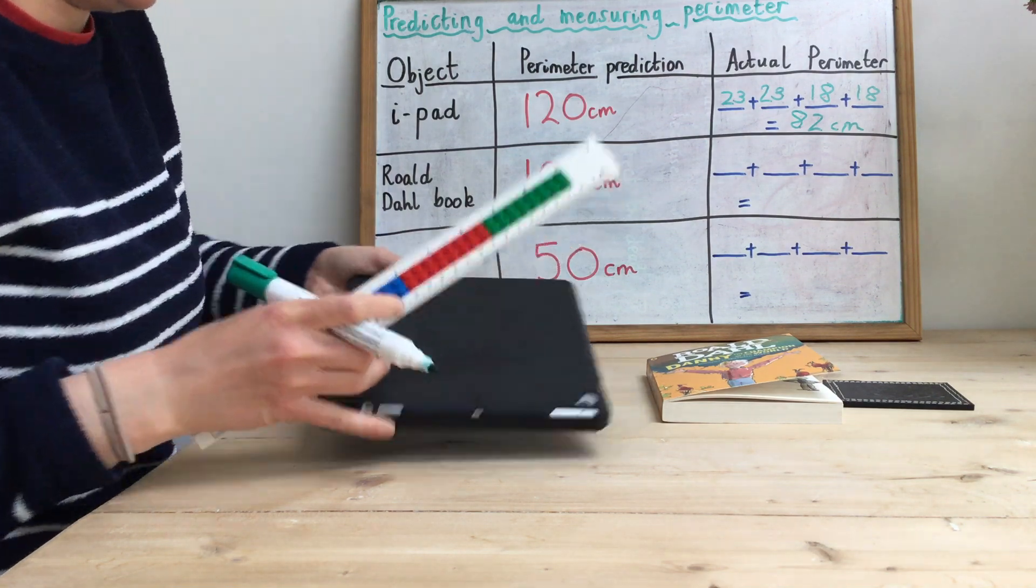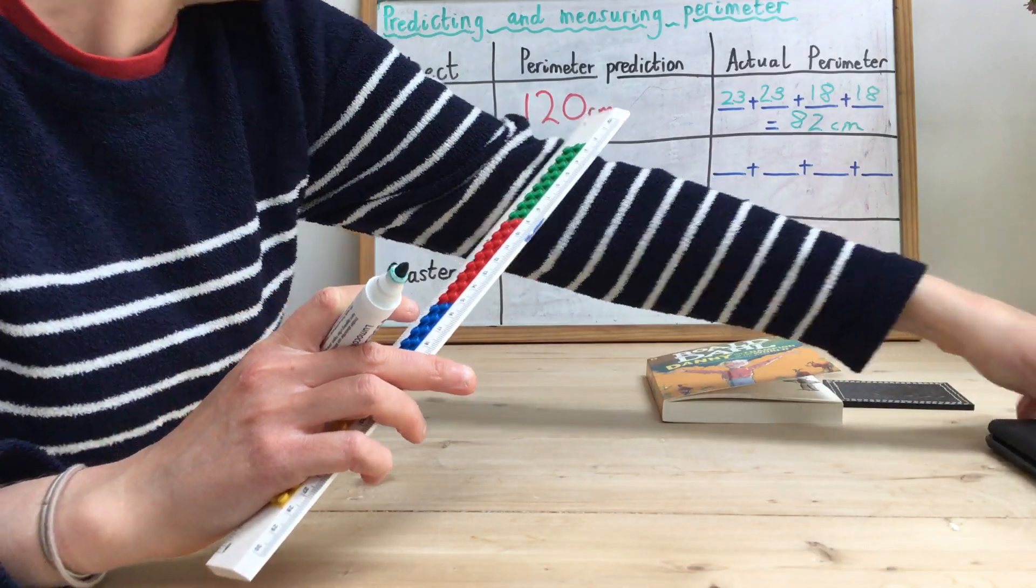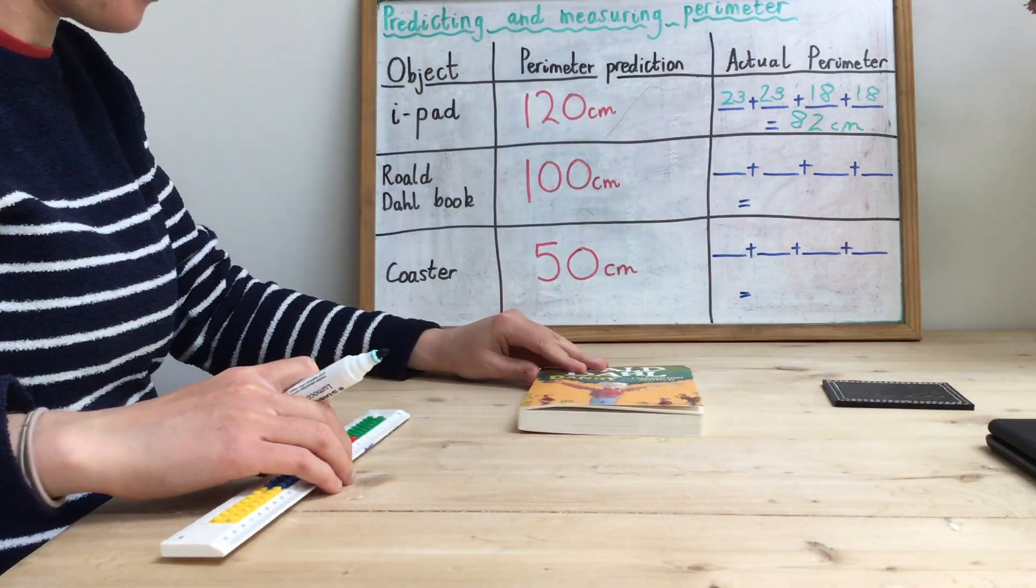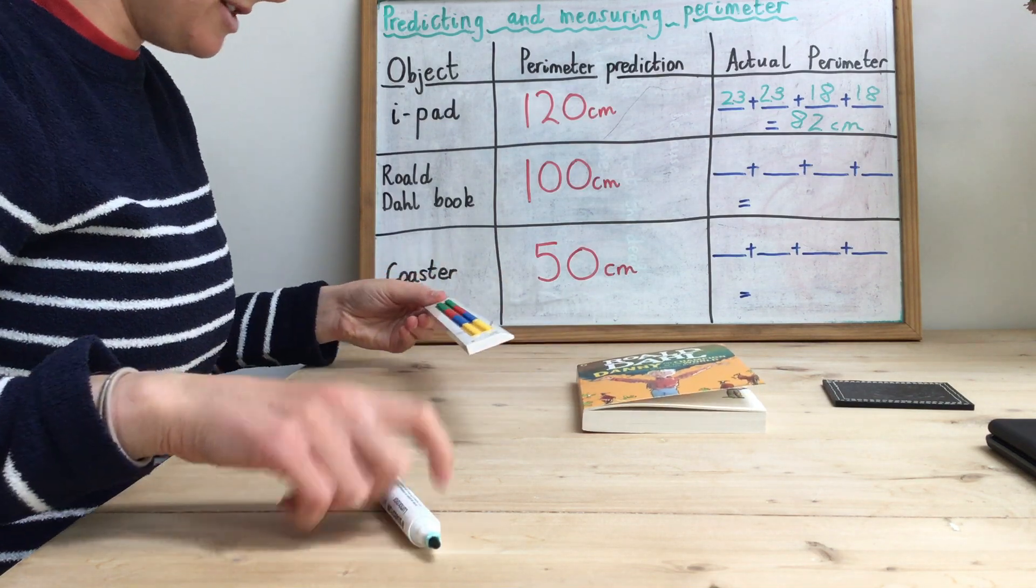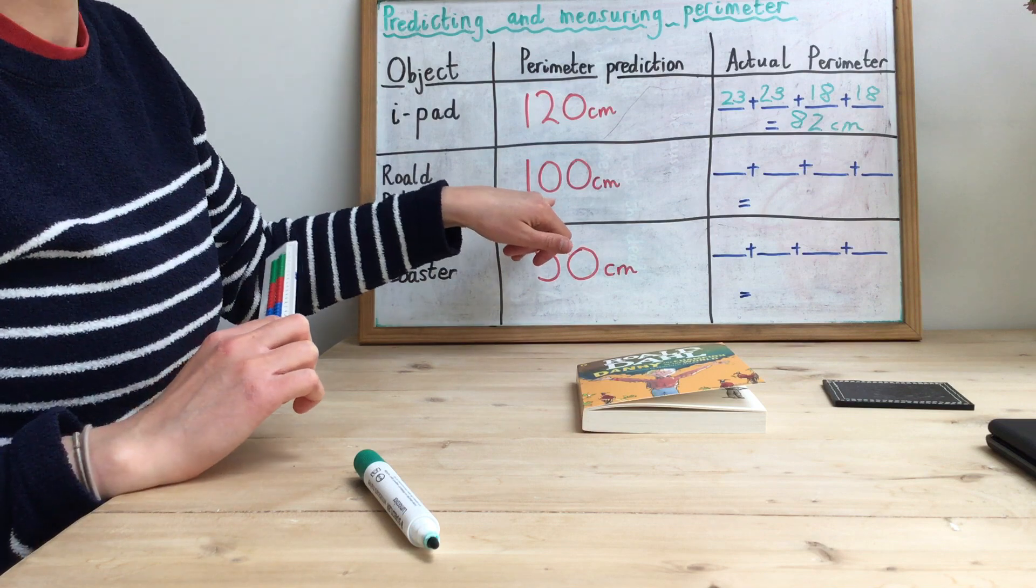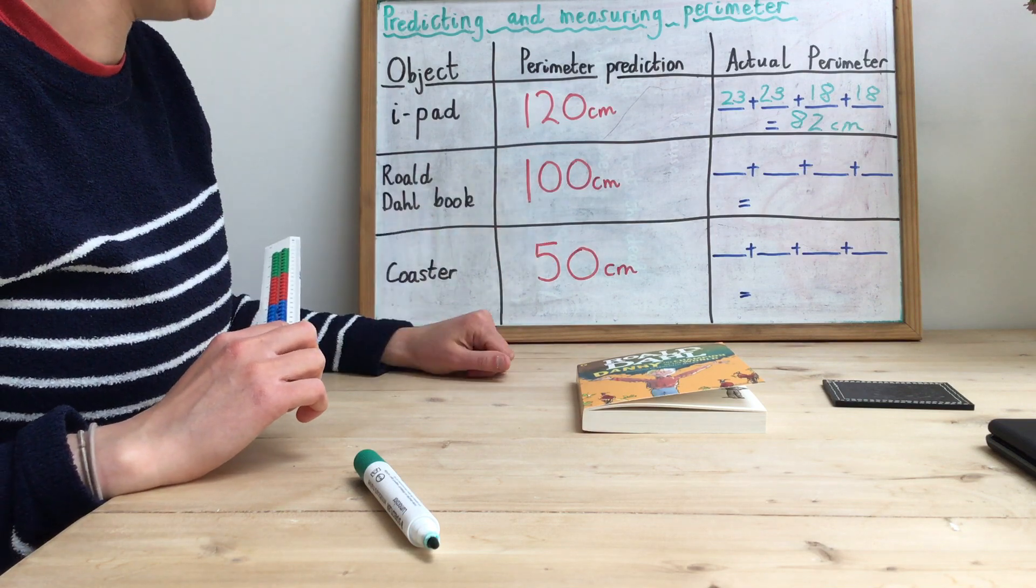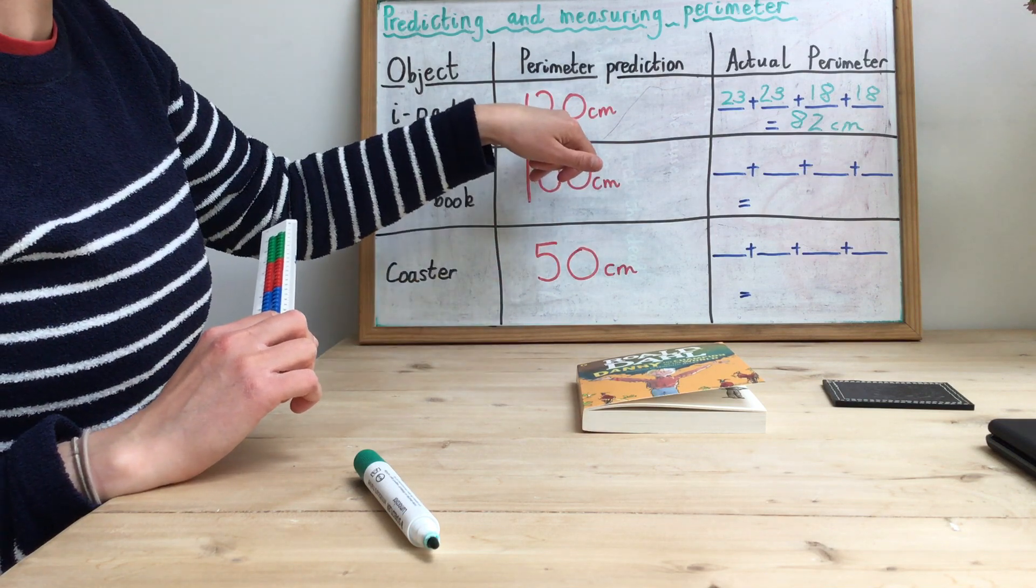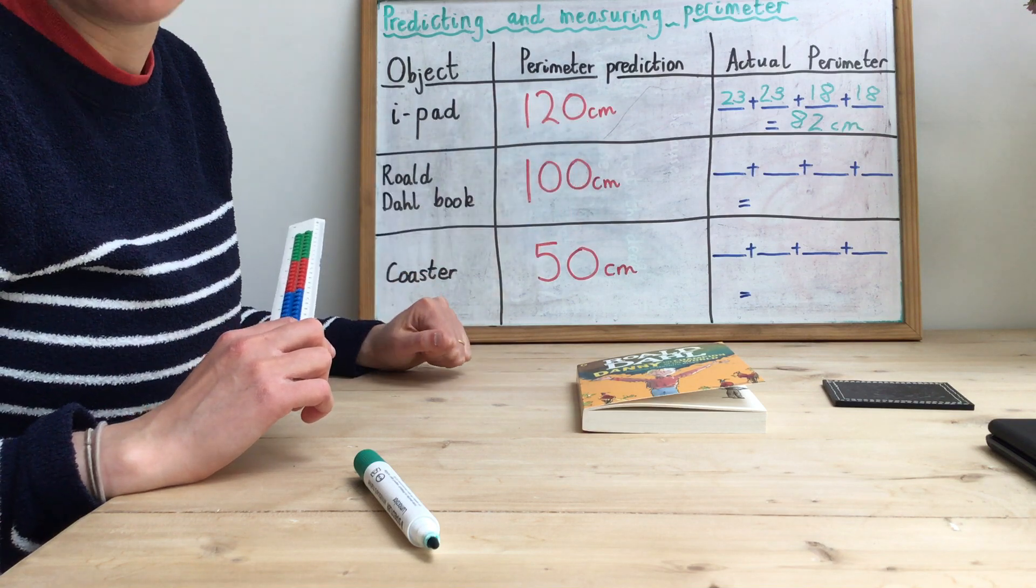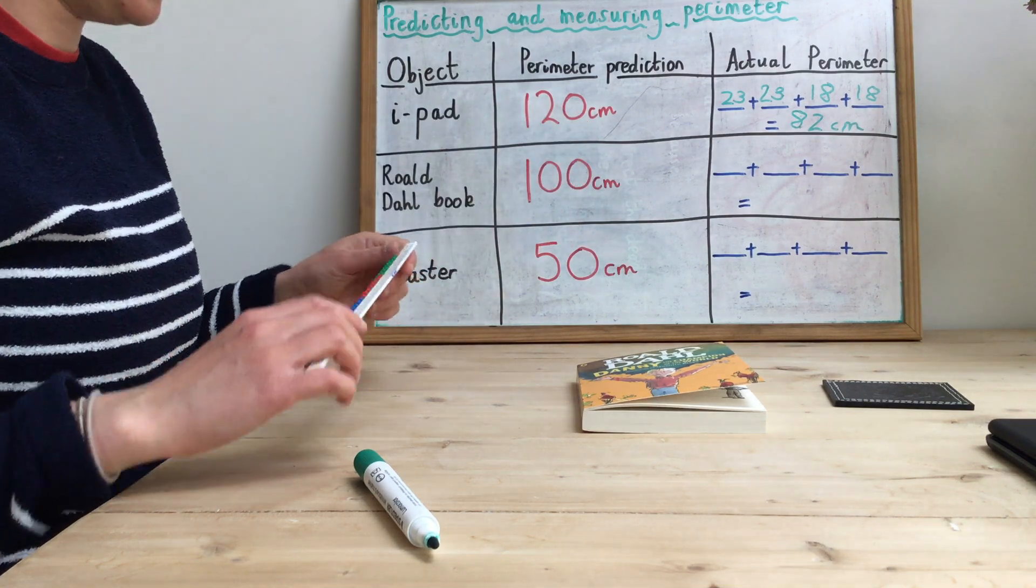Okay, next one I'm going to do, I'm just going to move that one out of the way, is my Roald Dahl book. So I'm going to measure the perimeter of this as well. So, getting my ruler out again, I'm going to measure the long edge. First of all, I predicted that the perimeter is going to be 100 centimeters. I went a bit too far on my prediction here, so I wonder if I've maybe over-predicted there as well. Let's see.